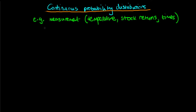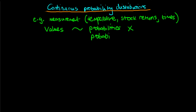Unlike discrete distributions, the values of the function which represents our continuous probability distribution are not interpretable as probabilities, and we're going to discuss why that's the case in this video. Instead, what they represent are things called probability densities, which are measures of the concentration of probability over a particular interval.